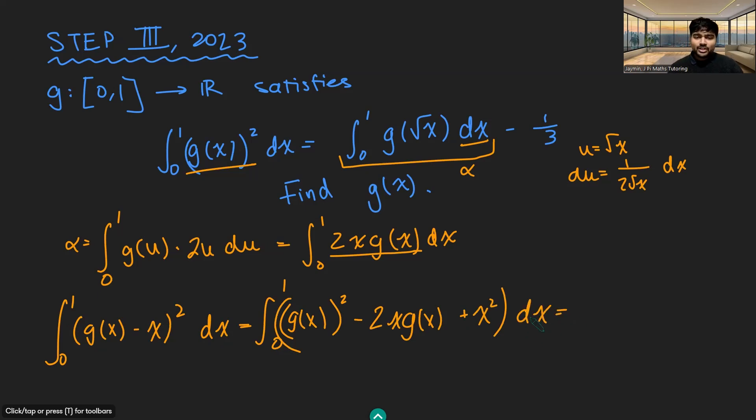But now g(x) squared, the integral from 0 to 1 of that is α minus 1/3. Then I've got minus the integral from 0 to 1 of 2xg(x). But that's exactly what we have here, and we know that's α. So we've got minus α there. And then we've got plus the integral from 0 to 1 of x² dx, and you can just evaluate that. That's going to be 1/3. And kind of remarkably, α minus 1/3 minus α plus 1/3 is 0.